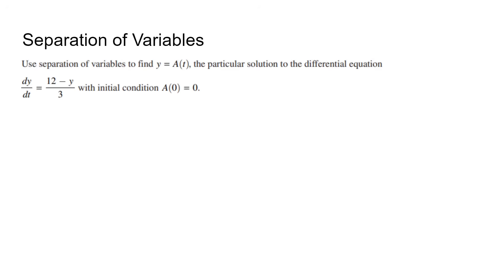This equation has the variables y and t, which we will separate. Divide both sides by the y term, and multiply each side by dt. We now have them separated.